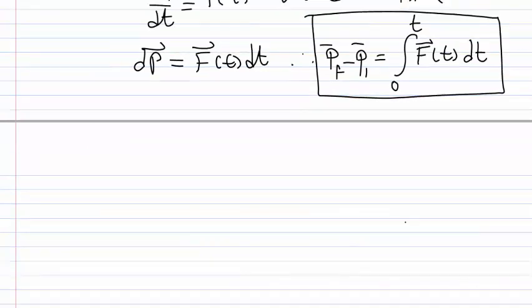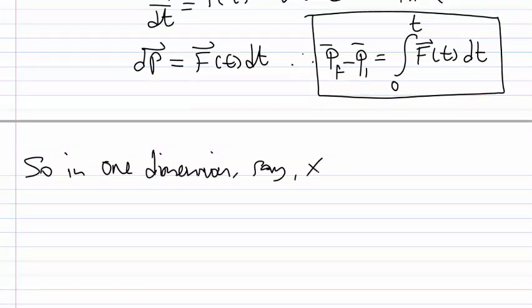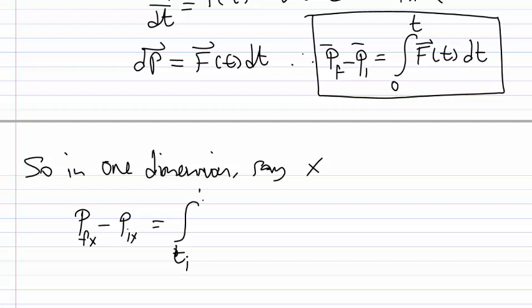In one dimension — say the X dimension — we can write: P_final_x minus P_initial_x equals the integral from T_initial to T_final of F_x(t) dt. This is the one-dimensional case for a variable force.